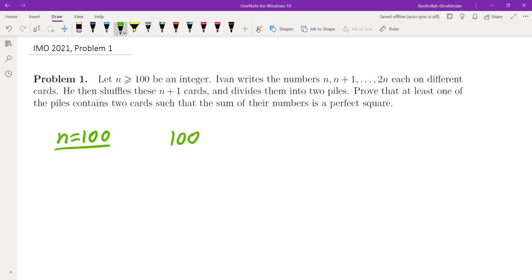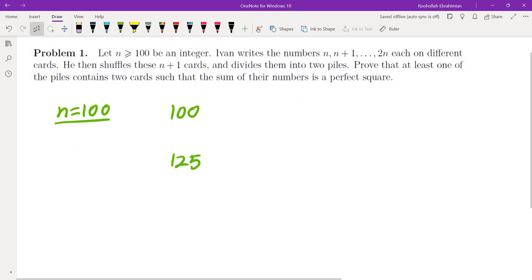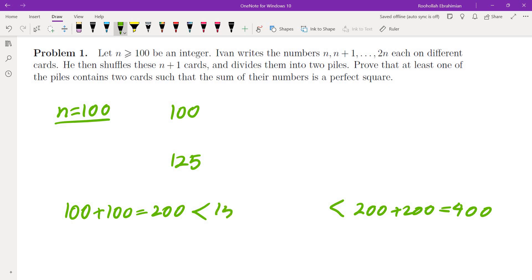So I started listing these, if I have 100 on one side, 125 would be on the other side. So the perfect squares that appear as the sum of these 2 numbers in this range are going to be, the smallest one would be 100 plus 100, which is 200. So you have to have something more than 200. And the largest one would be 200 plus 200, which is 400. So the numbers that I have are going to be from 15 squared, 225, all the way to 19 squared.